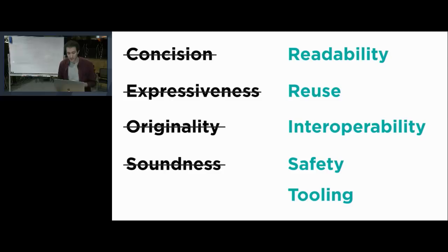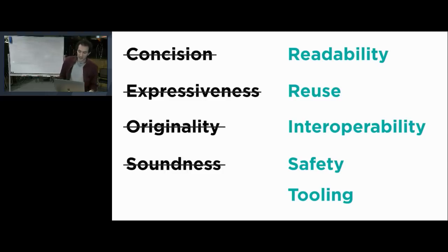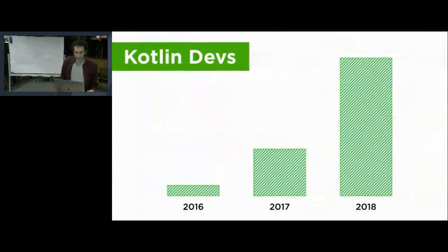So this is the set of actual goals that we have, and 1.3 contributes to these goals in many ways. I'll give some highlights at a very high level, with details on particular topics later. First of all, I would like to tell you about where we are now and what kind of momentum Kotlin has at the moment.